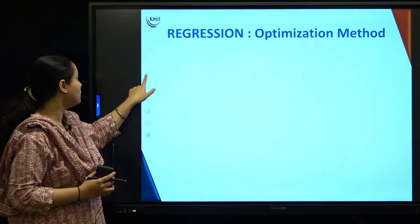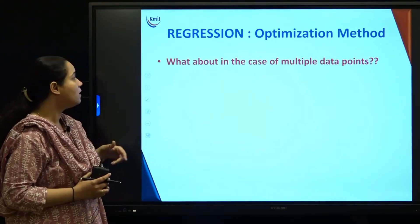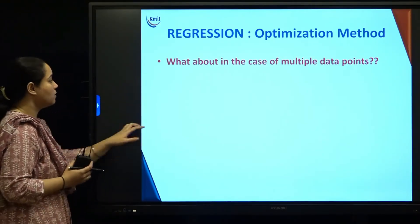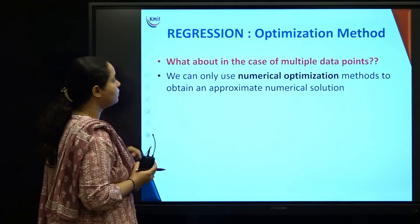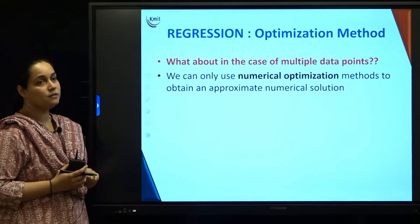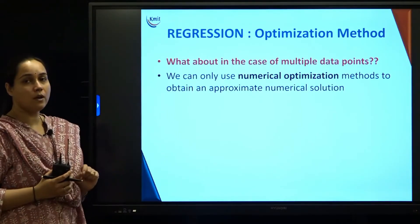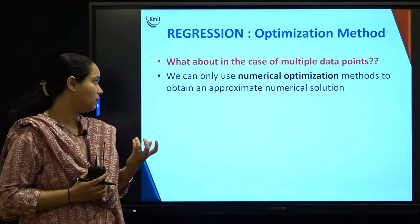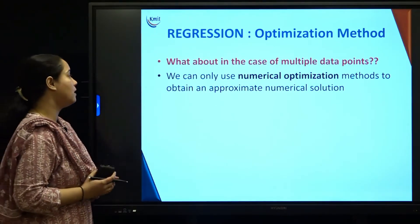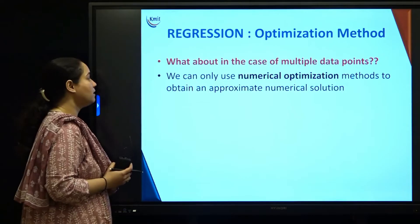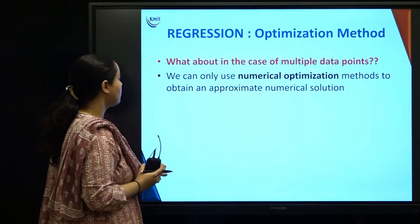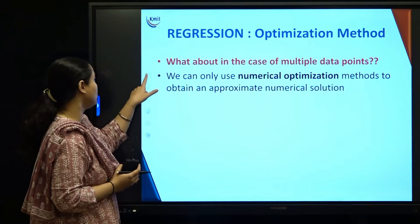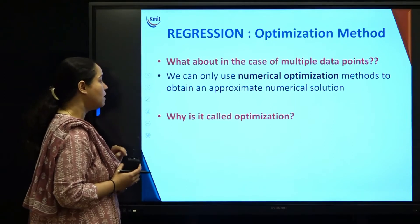We do have cases where multiple data points and multiple neurons are available. In that case, you have to go for an optimization method — a numerical optimization method approach — which is the best approach to get an approximate numerical solution.